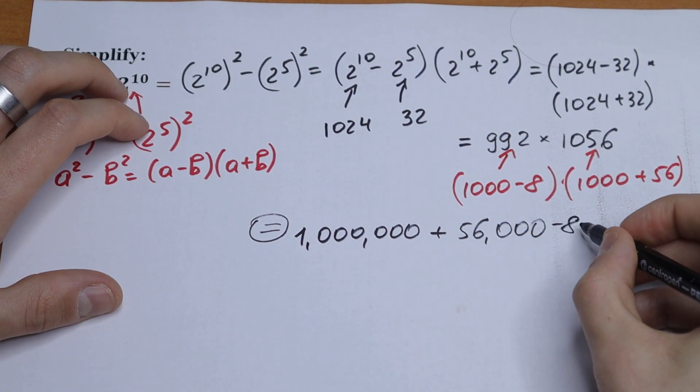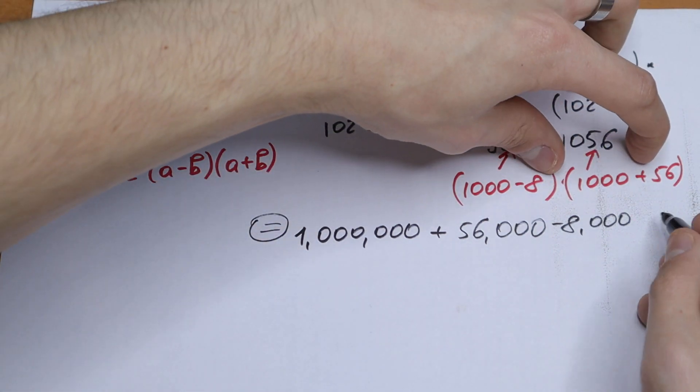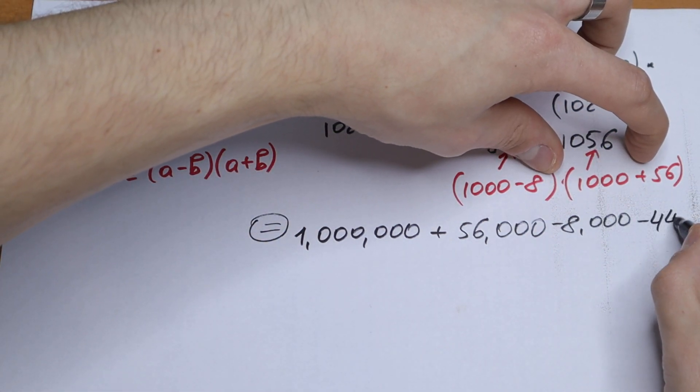Minus 8 thousand. And as a result, in the end, we will have 8 times 56, which will be minus 448.